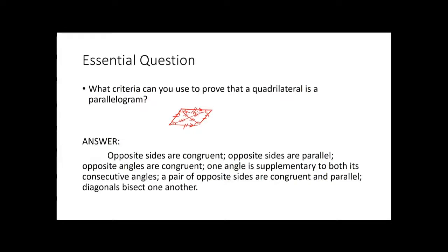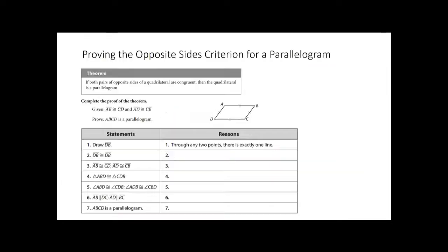Those are the criterions the answer is talking about. Let's go ahead and start looking at proving them. We're first going to look at the opposite sides criterion. The theorem says: if both pairs of opposite sides of a quadrilateral are congruent, then the quadrilateral is a parallelogram.